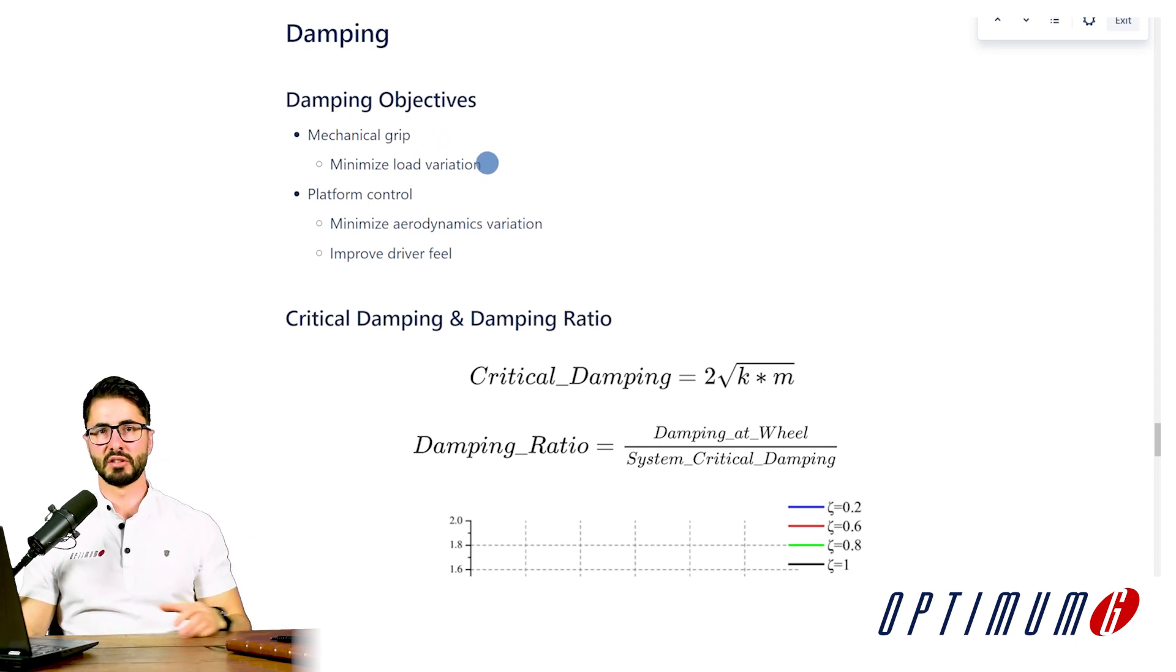The second aspect to consider when defining damping is platform control. So how are we controlling the movement of our suspension in braking or our car in braking, roll and so on. We could have two goals with this. Number one is to minimize aerodynamics variation so that the aero balance is a little bit more constant, not changing with every driving input or every change of behavior of the car.